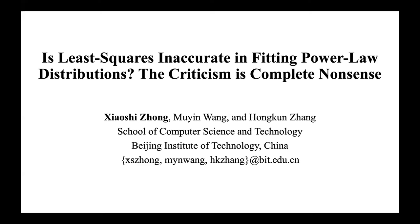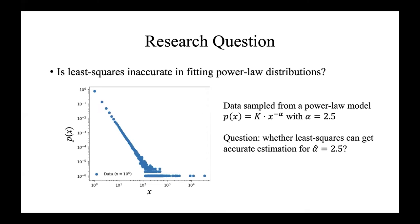This research was conducted by two undergraduate students with me. The central question is, is least-squares inaccurate in fitting power law distributions? The bigger plot they have is sampled from a power model with the exponent being 2.5. Then the question is whether least-squares can get accurate estimation for the exponent?